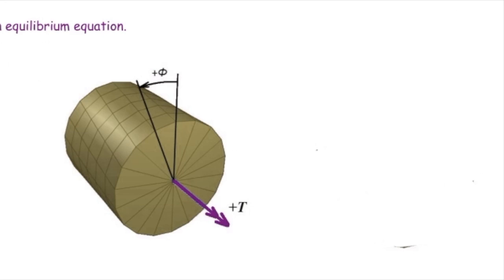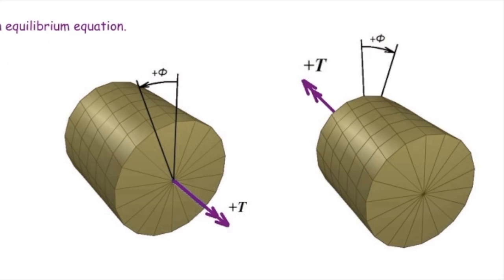The sign convention that we want to introduce for torque is exactly similar to the sign convention that you previously had for axially loaded elements. Look at this figure. If the double arrow torque goes outward from the surface, we assume that it is positive. So the torque that is shown in this figure is positive.